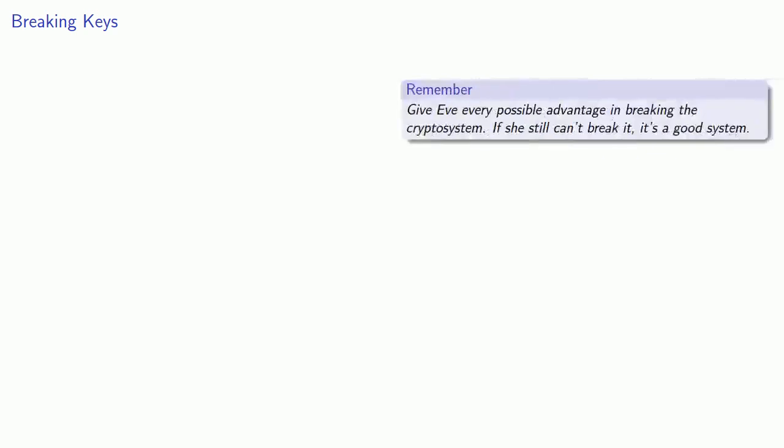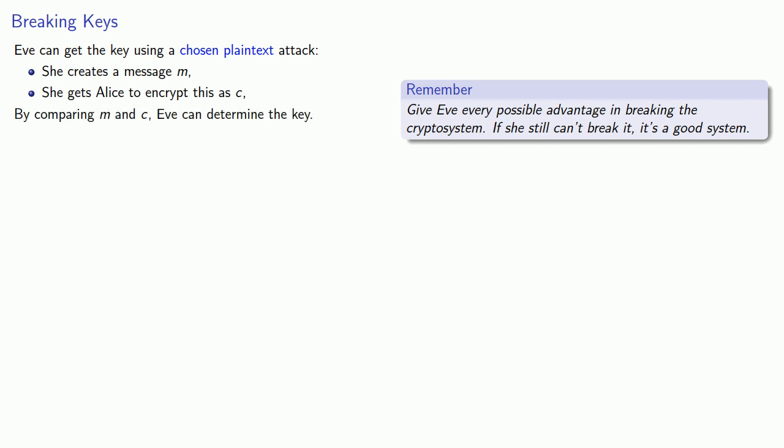Remember that in our analysis of any cryptographic system, we want to give Eve every possible advantage in breaking the system. If she still can't break it, it's a good system. So one advantage we might give Eve is to allow her to use the system, and Eve can get the key using what's known as a chosen plaintext attack. She creates some message m, gets Alice to encrypt this as c, and then by comparing m and c, Eve can determine the key.